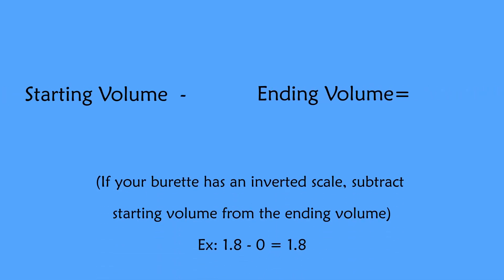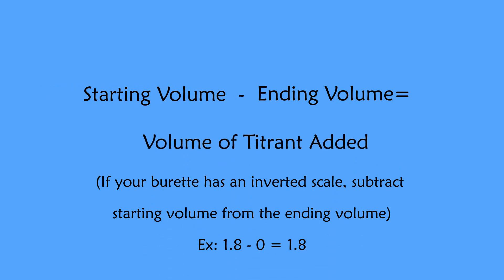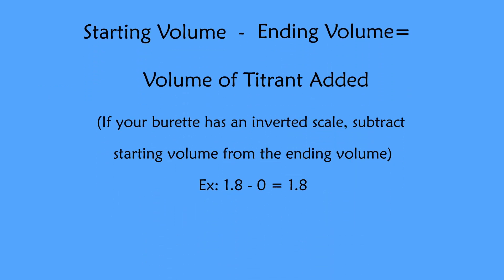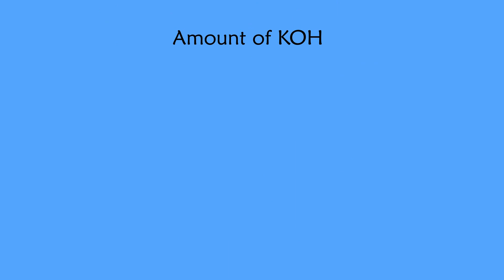Subtract the ending volume from the starting volume to get the volume of titrant added. Calculate the amount of potassium hydroxide using the following equation.